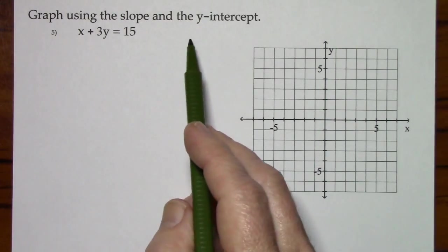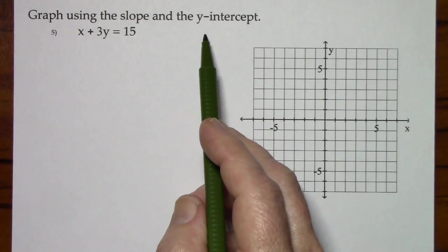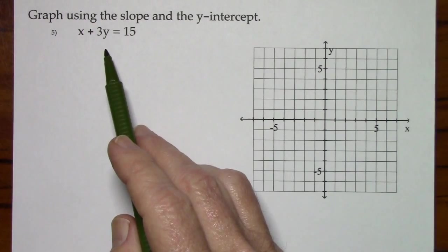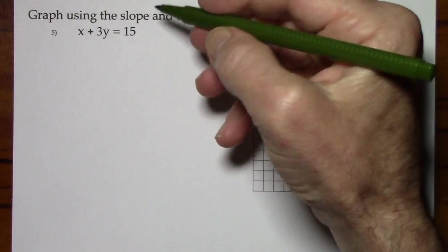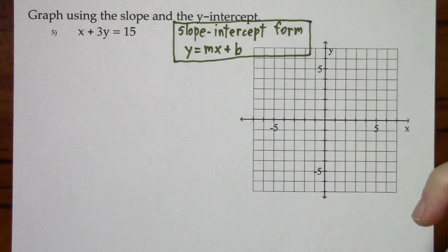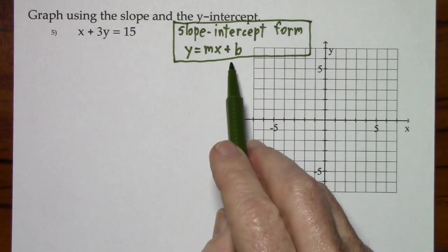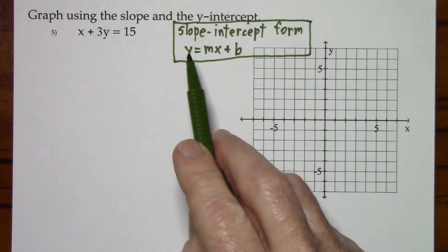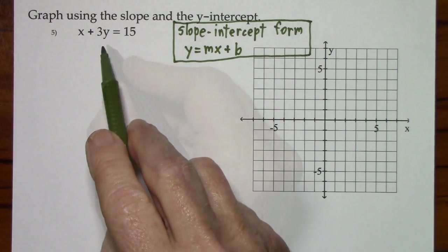Now with this one we're to graph using the slope and y-intercept. So we'll rearrange this equation to slope-intercept form. That is y equals mx plus b, so we'll need to get y all by itself with our original equation.